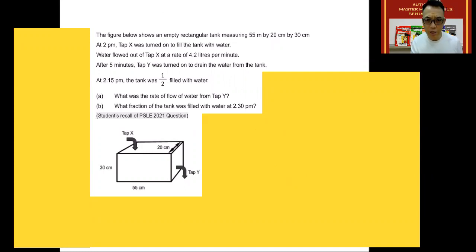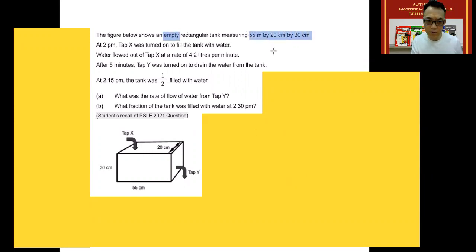The first step in answering any such questions is to find the keywords. The figure below shows an empty rectangular tank measuring 55 by 20 by 30 centimeters. At 2 p.m., Tab X was turned on to fill the tank with water. Water flows out of Tab X at a rate of 4.2 liters per minute.